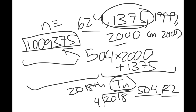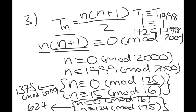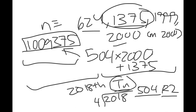That gives us 504 × 2000 + 1375 = 1,009,375. The main ideas were applying the Chinese Remainder Theorem to find the four residue classes mod 2000, and then grouping numbers into groups of 2000 to find the 2018th one.